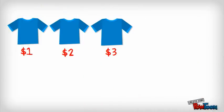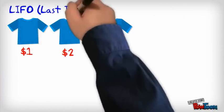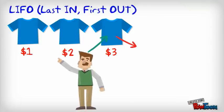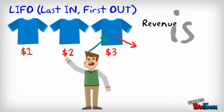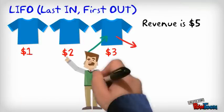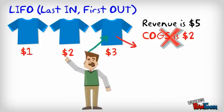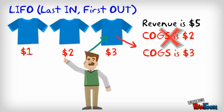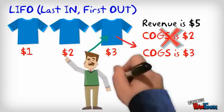Under LIFO, whatever we bought last is the first to be sold. Let's say this guy picks up the second shirt. He has to pay $5, our revenue. Our cost of goods sold is not $2 because we do not care which shirt he picked up. We assume he picked up the last one that we bought, so our cost is $3.